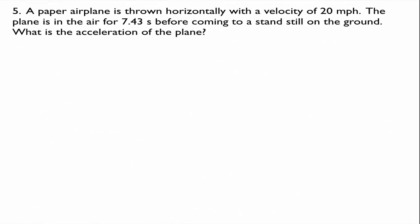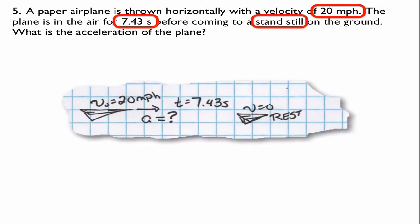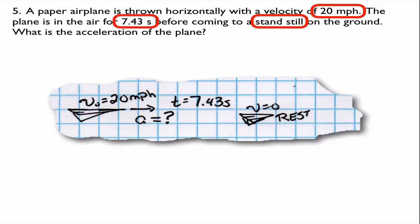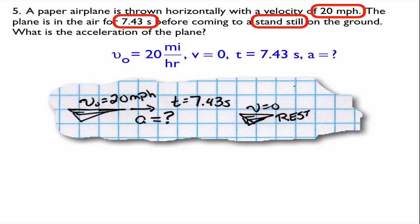Number five. A paper airplane is thrown horizontally with a velocity of 20 miles per hour. The plane is in the air for 7.43 seconds before coming to a standstill on the ground. What is the acceleration of the plane? Unit clues: 20 miles per hour is a velocity, 7.43 seconds is a time, and 'coming to a standstill' implies final velocity is zero. Initial velocity is 20 miles per hour at the start of the story, time is 7.43 seconds, final velocity is zero, and acceleration is the unknown I'm looking for.